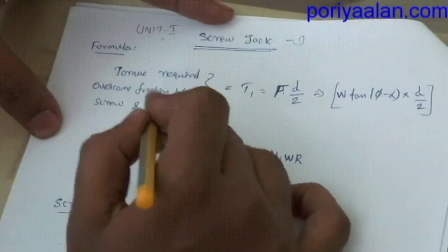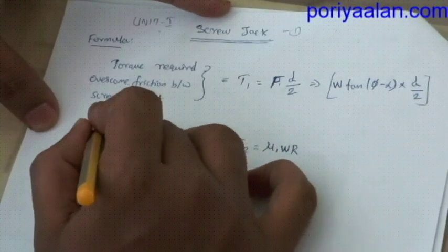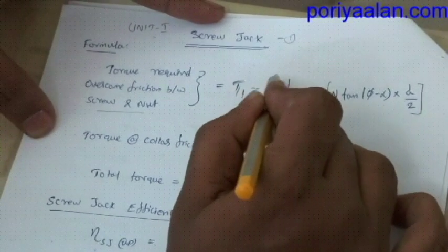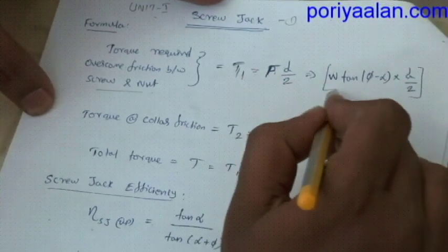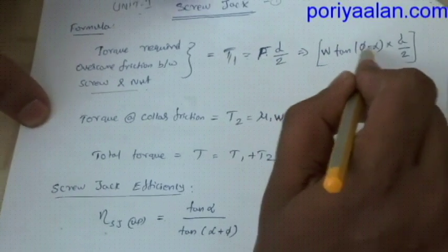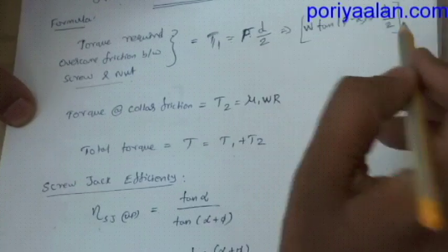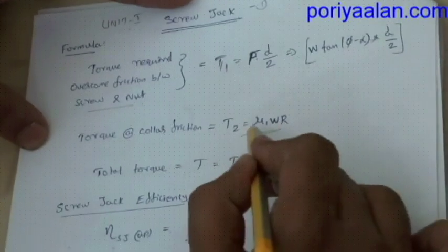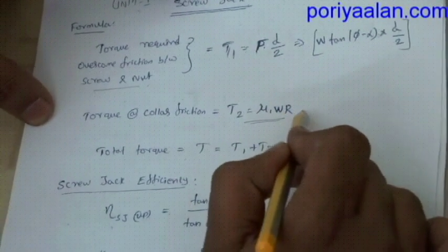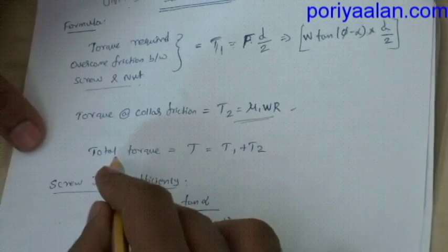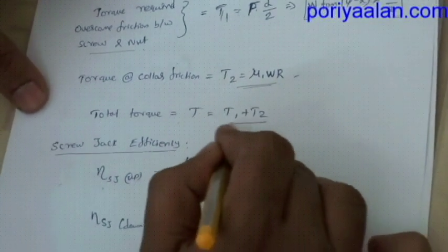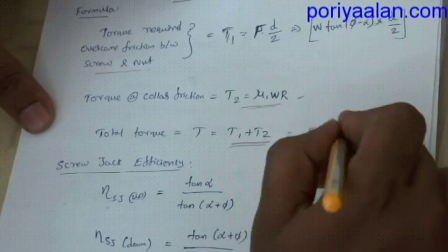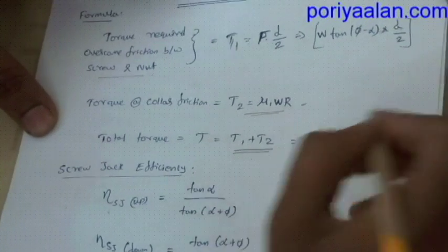The torque required to overcome friction between screw and nut: T1 is equal to F into D by 2. Then the torque at collar friction, T2 is equal to mu1 times W times R. The total formula is equal to T1 plus T2.